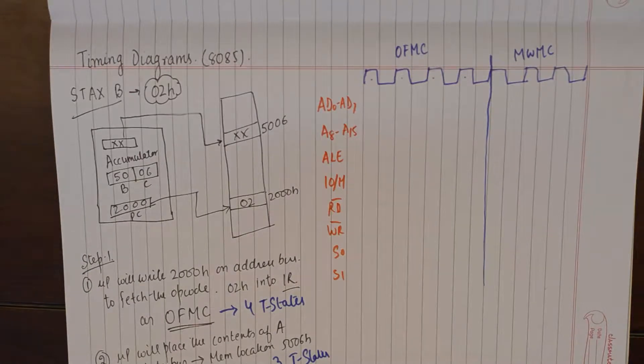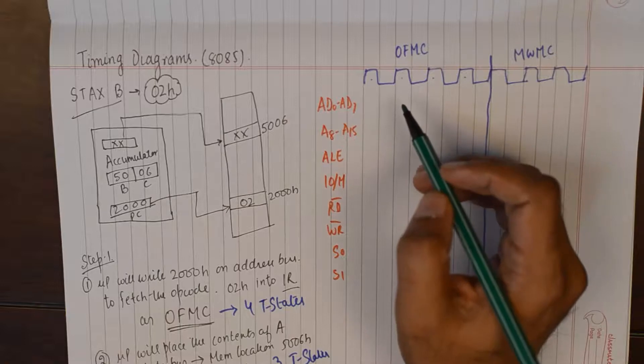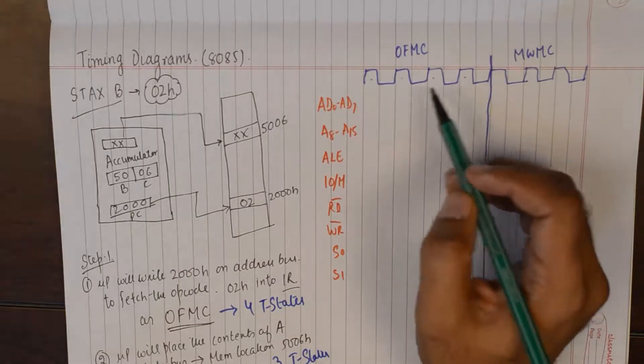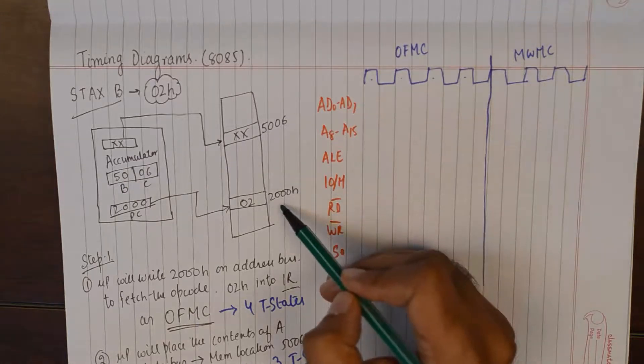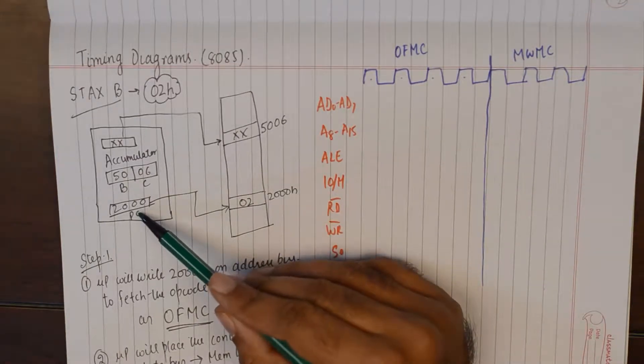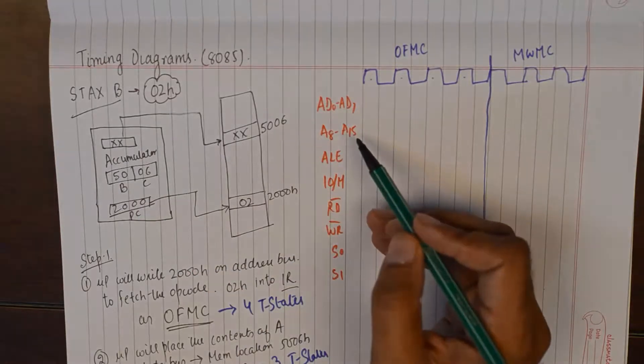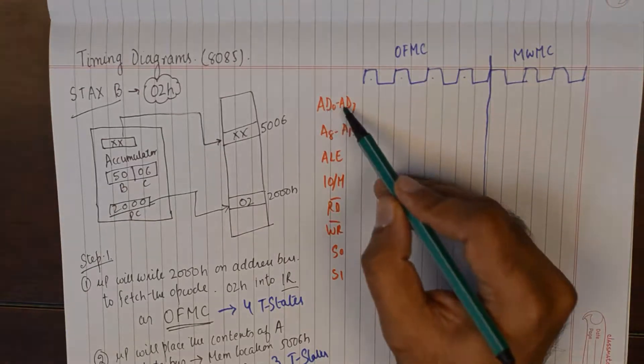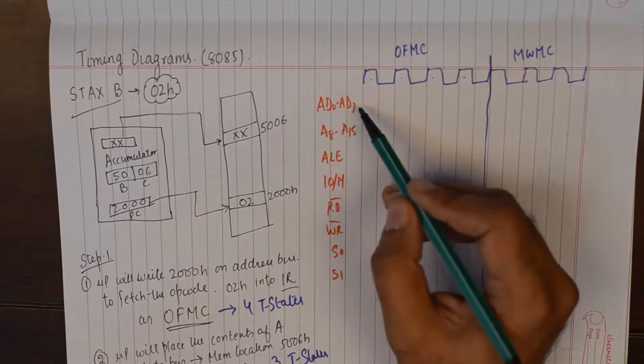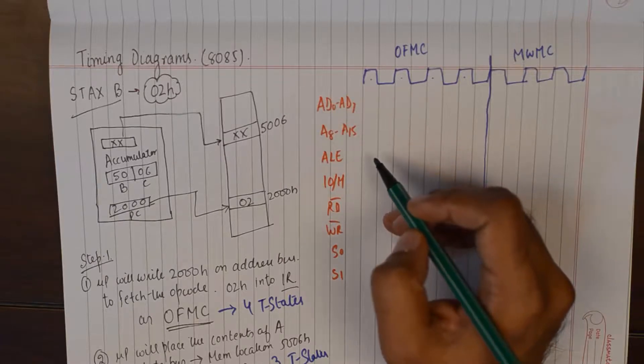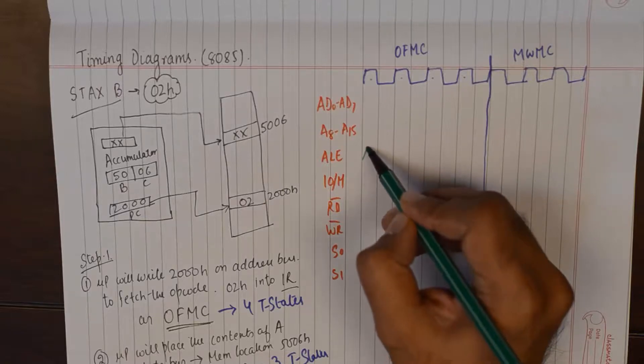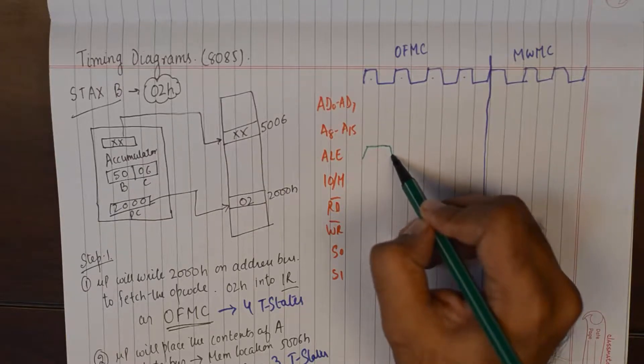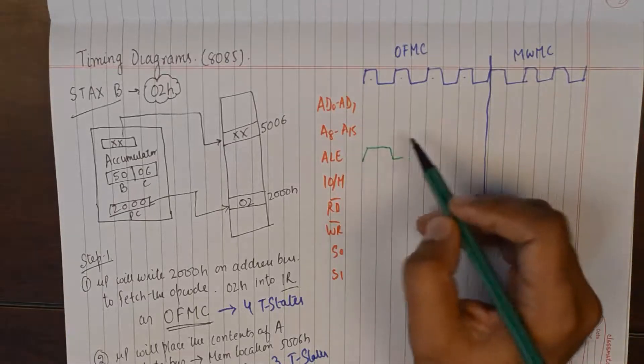Now if you have watched my previous tutorial on machine cycle and timing diagrams you will know that we need to place the contents of the program counter onto the address lines in the first T state. So in the first T state we want the multiplexed address data lines to act as address lines. So we will make ALE as 1 in the first T state.